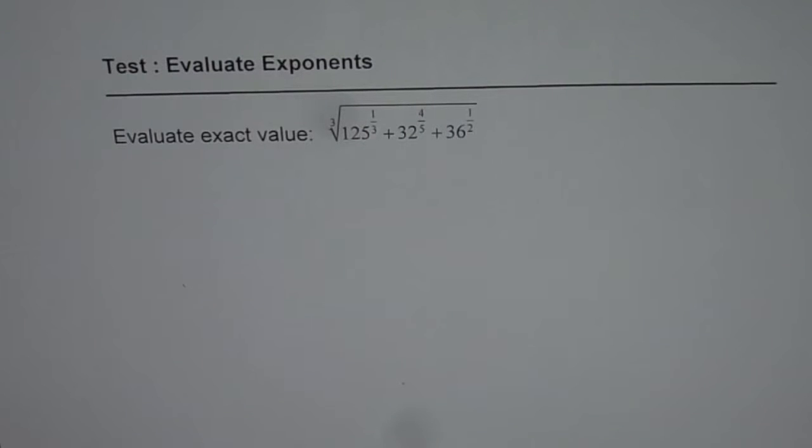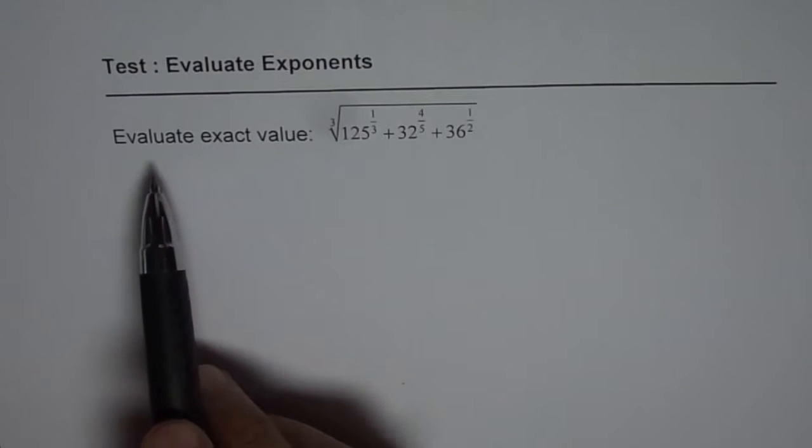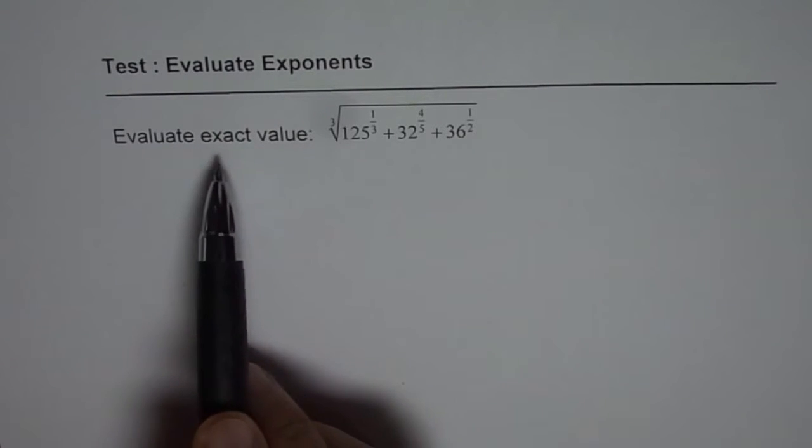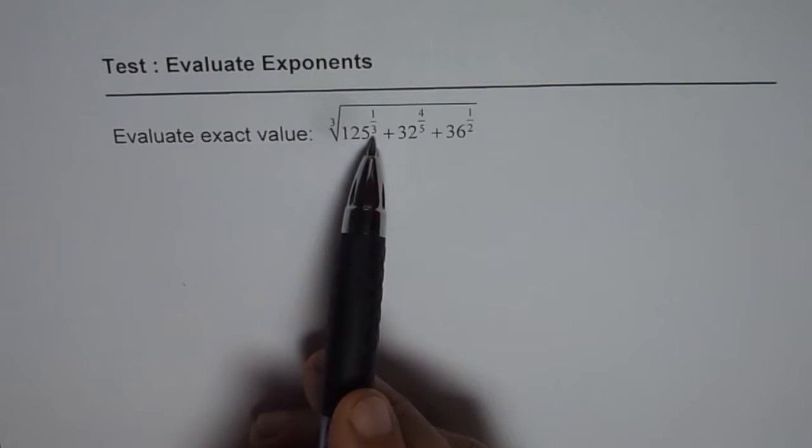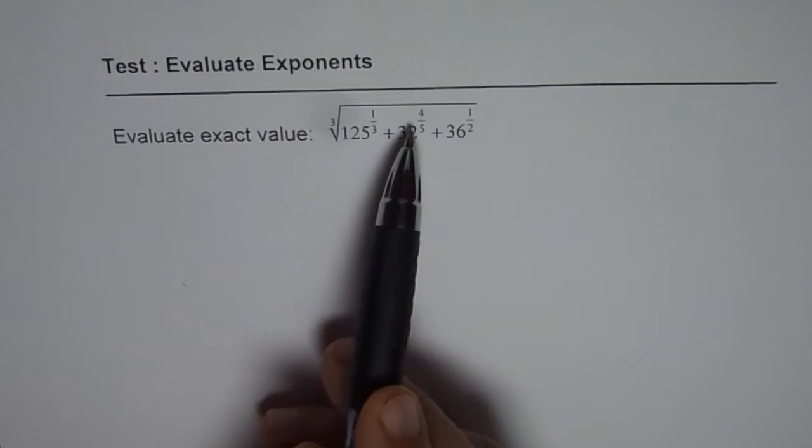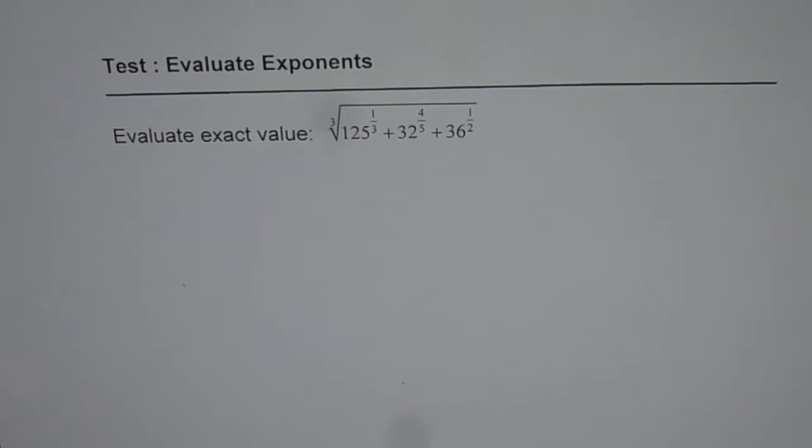I am Anil Kumar sharing with you some challenge questions regarding exponents. Evaluate exact value of cube root of 125 to the power of 1 over 3 plus 32 to the power of 4 over 5 plus square root of 36. Let us see how to solve it.